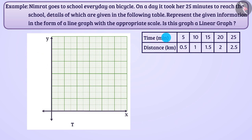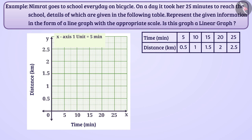We will show time in minutes by taking 1 unit is equal to 5 minute scale on x-axis. Similarly, we will show distance on the y-axis by taking 1 unit is equal to 0.5 km scale.